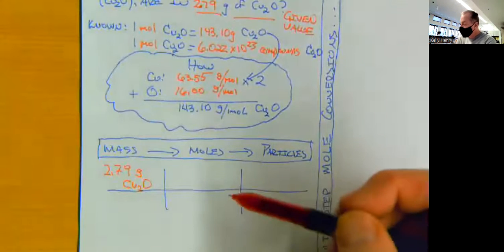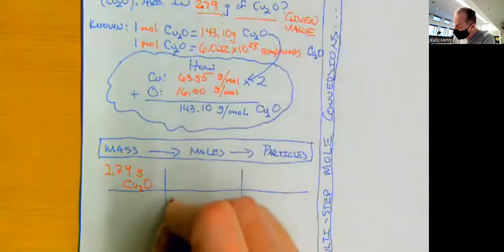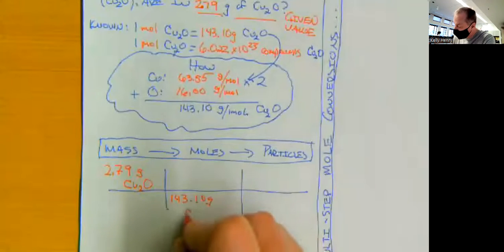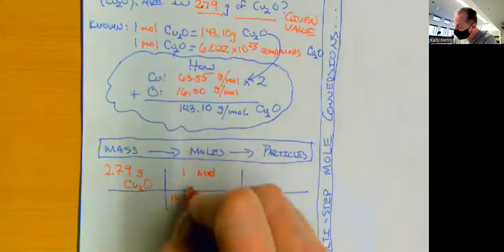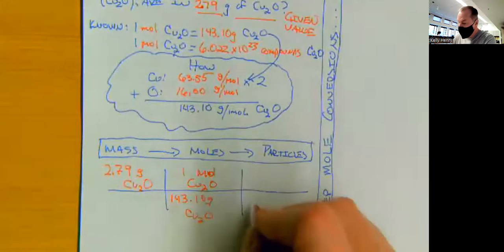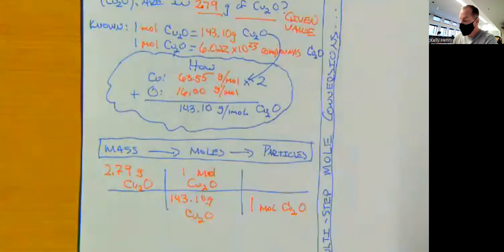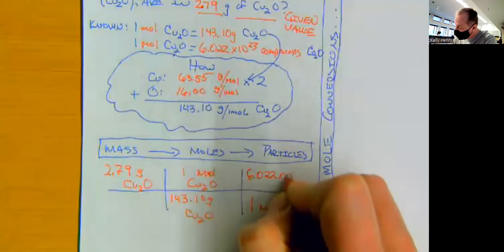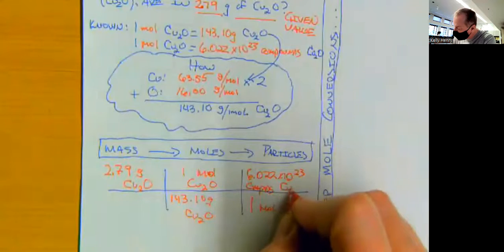And then we know we're going to use our molar mass as our conversion factor here. So we know that 143.10 grams of copper one oxide is in one mole of copper one oxide.